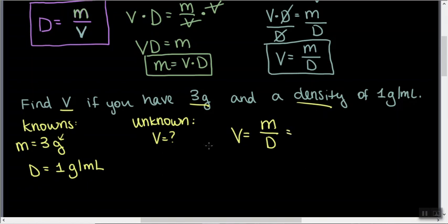Okay, so the formula that we want to use for this is going to be V equals M over D. And then we just plug in the values. So M equals 3 grams, 3 grams on the top there. Density equals 1 gram per milliliter.